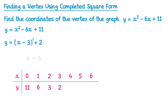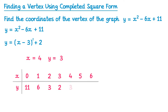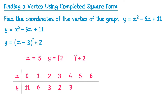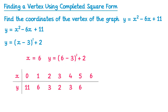For x equals 4: 4 take away 3 is 1, 1 squared is 1, 1 add 2 is 3. So if x is 4, y is 3. For x equals 5: 5 take away 3 is 2, 2 squared is 4, 4 add 2 is 6. So if x is 5, y is 6. And finally for x equals 6: 6 take away 3 is 3, 3 squared is 9, 9 add 2 is 11.